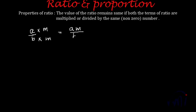And if we try to write it in the simplest form, this m will cancel this m, and this will again become a by b, which is nothing but a is to b.